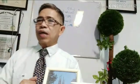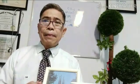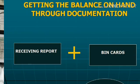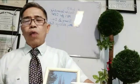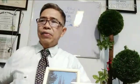Getting the balance on hand through documentation — traditionally in a manual system, we use the receiving report when we receive items from outside suppliers. These received items are then recorded on bin cards so we can determine the balance on hand or the quantity we have in the warehouse.